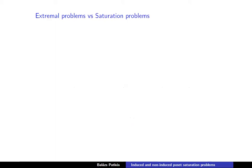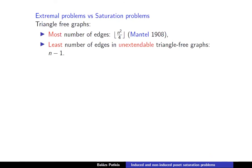A little bit about saturation problems. In my view, they are little brothers of extremal problems. In extremal problems, we are looking for the largest combinatorial objects having some prescribed properties, as opposed to saturation problems, where we are looking for minimum-sized graphs, hypergraphs, or set families with some prescribed property. Let's see some examples. Consider the property of being a triangle-free graph.